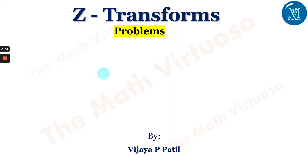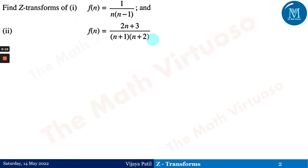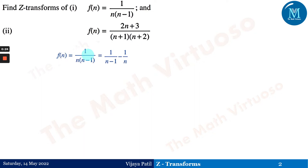Hello and namaste. In continuation with the Z-transform, we have started with different kinds of problems based on Z-transform and standard functions. Today's session will be finding out the Z-transform of f(n) = 1/(n·(n-1)) and f(n) = (2n+3)/((n+1)·(n+2)). In the first case, we need to separate the denominators, which can be done using partial fractions.